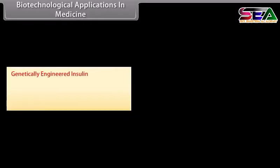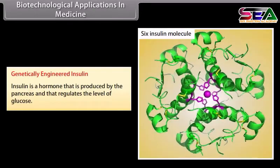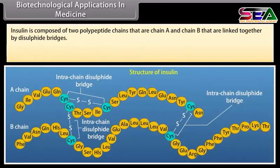Biotechnological applications in medicine: genetically engineered insulin. Insulin is a hormone produced by the pancreas that regulates the level of glucose. Insulin is composed of two polypeptide chains — chain A and chain B — that are linked together by disulfide bridges.